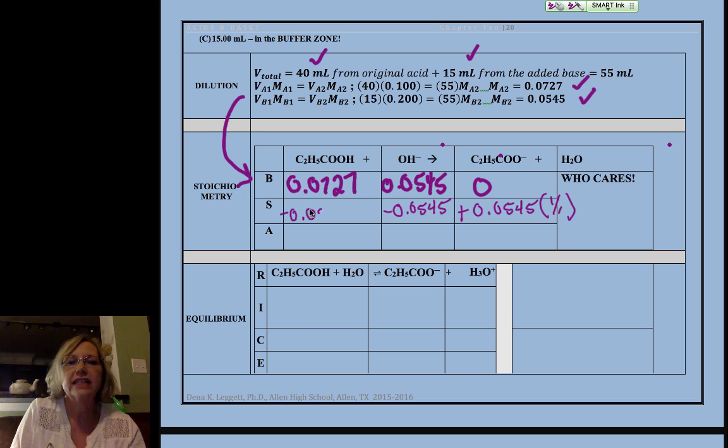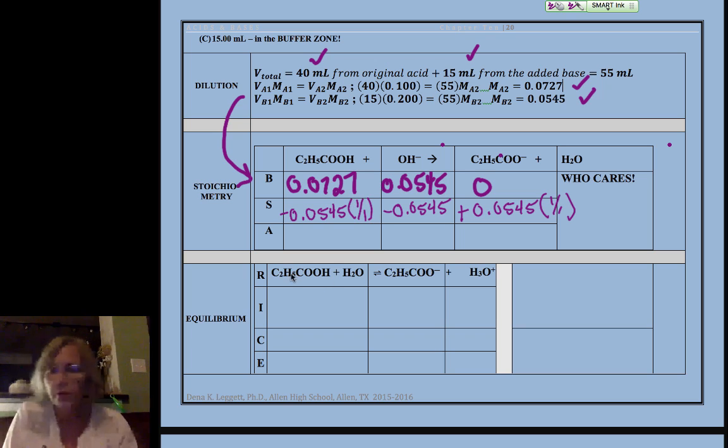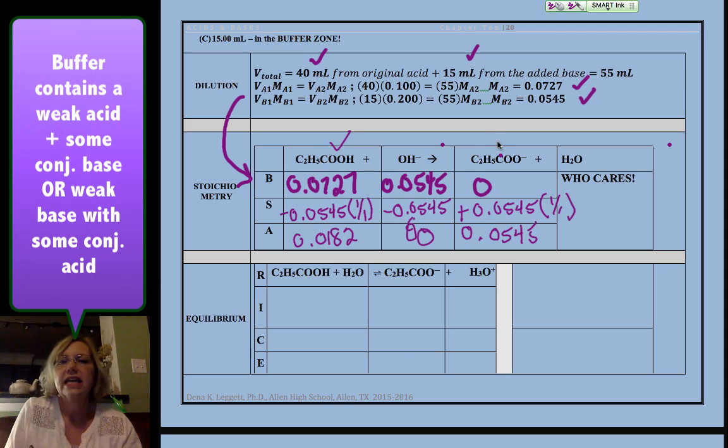So we're going to add that amount over here, technically times that mole ratio, and we're going to lose from reactant. Okay, and we end up with 0.0182, none of this, and some of this. So a buffer is a solution that has a weak and some of its conjugate, and we will talk a lot more about that in later videos.